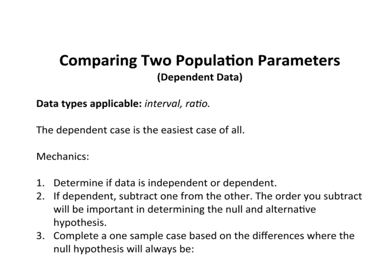Thus far, we've been looking at comparing independent groups. What about if we have dependent data? How do you handle a situation where I want to compare two means with dependent data? The data type applicable is both interval and ratio. It does not make sense for nominal or ordinal data. The dependent case is probably the easiest of all.